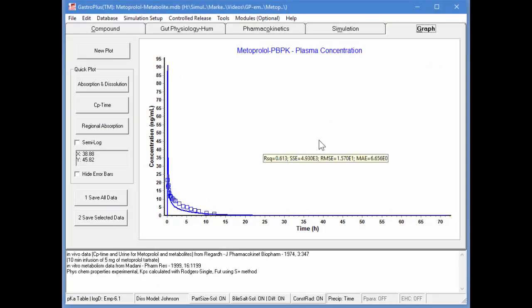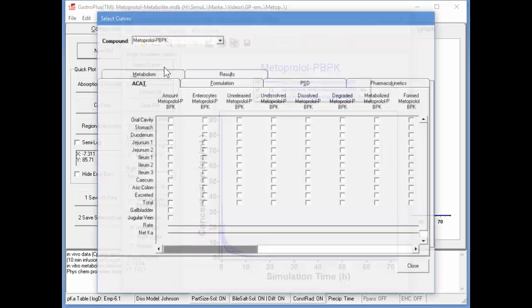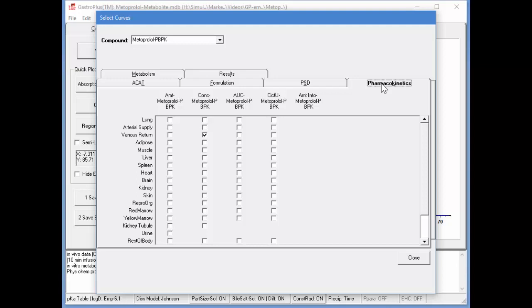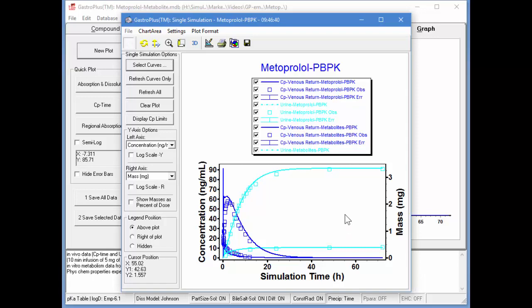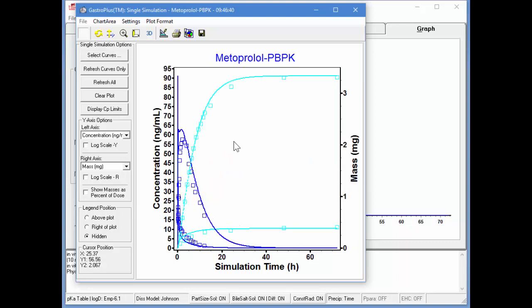If we go into the Graph tab, we can click on New Plot and select curves for both the parent and the metabolites. We'll go into the Pharmacokinetics tab. The plasma concentration is already selected. We'll also select the amount in urine and then change the record to the metabolites and similarly plot the concentration in plasma and in the urine.